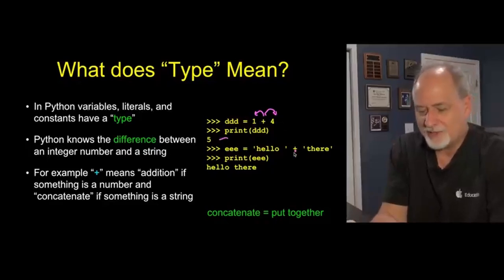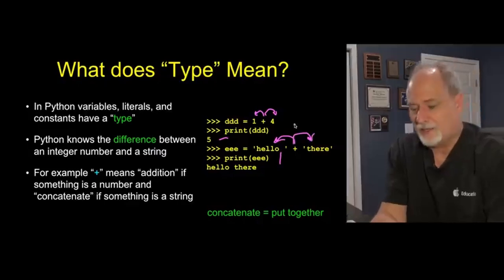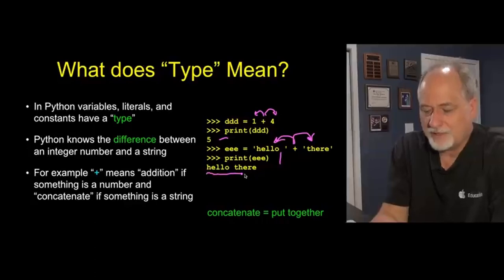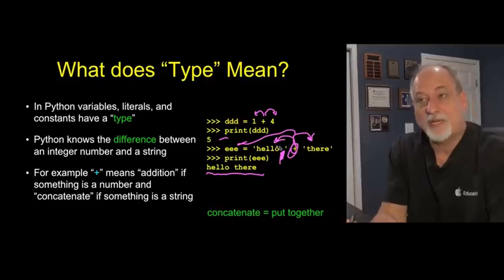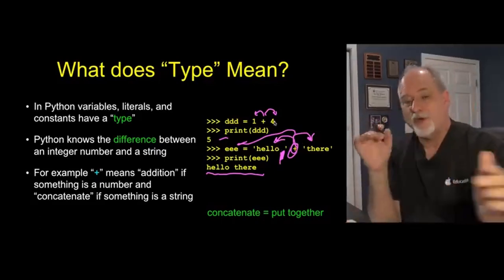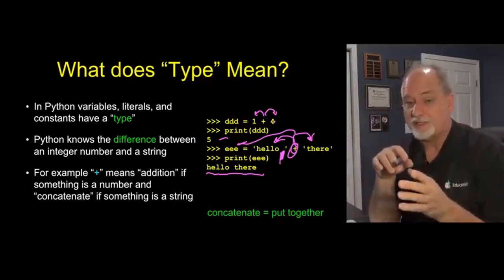We can also use this plus to concatenate two strings, this is hello blank plus there, and plus looks here, says that's a string and that's a string, so I know what to do with strings, I will concatenate those two things together. And so these operators are kind of smart, in that they kind of know what they're dealing with, and sometimes they will do one thing or another, depending on the kinds of values, variables, or constants that they're working with.